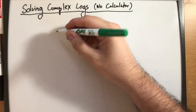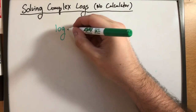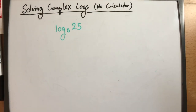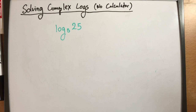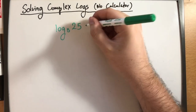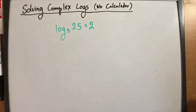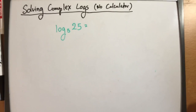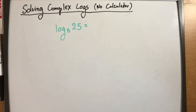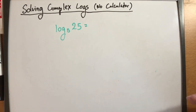Now let's take slightly more complicated problems. For example, log base 5 of 25. What we are solving for is the exponent that we need to raise 5 to so that it is equal to 25. The answer would have to be 2 because 5 squared is 25. If this still confuses you slightly, there's another way to approach this, which is to rewrite the problem as an exponent, because if you understand exponential equations better, rewriting a logarithm as an exponential equation is exactly the same thing and may make it easier to solve.